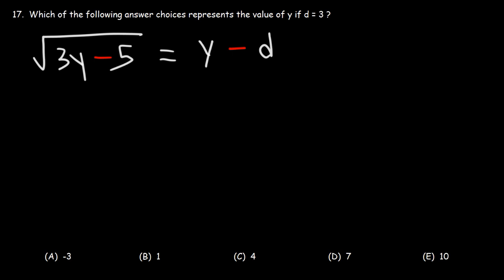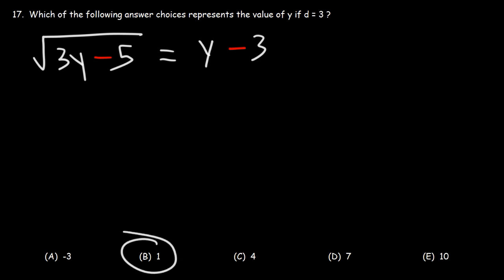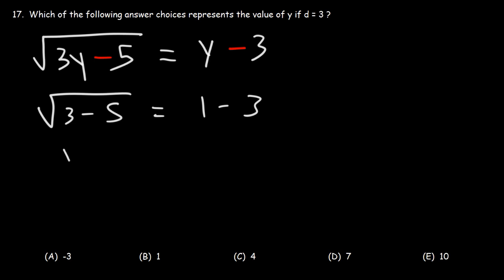Number 17. Which of the following answer choices represents the value of y if d is equal to 3? Let's begin by replacing d with 3. Now let's try answer choice B — let's see if both sides of the equation have the same value if y is equal to 1. Replacing y with 1: 3 times 1 is 3, 3 minus 5 is negative 2, and 1 minus 3 is also negative 2. But the square root of negative 2 is not equal to negative 2, so we can eliminate answer choice B.